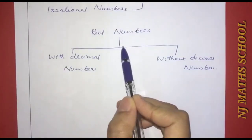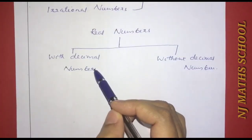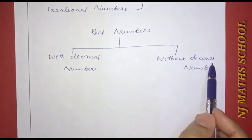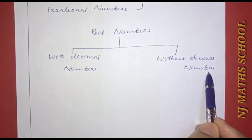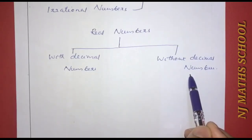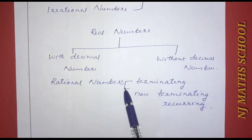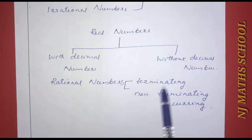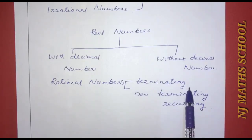Real numbers can be split into two parts based on decimal representation. With decimal numbers, a decimal expansion is either terminating or non-terminating.